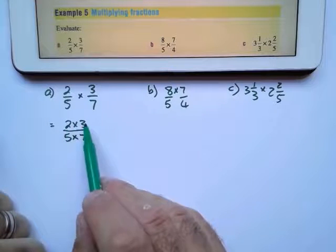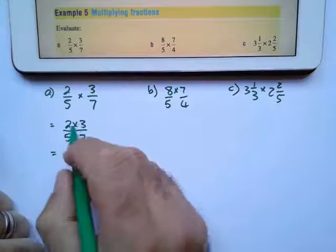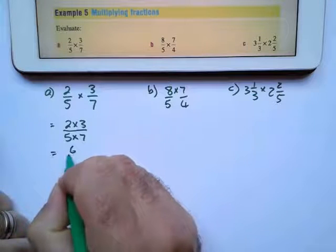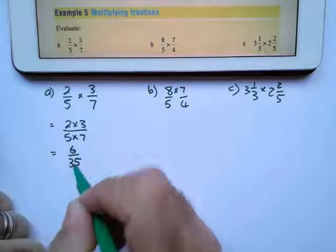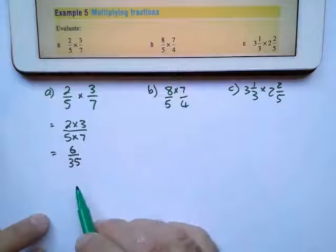2 can't divide any of those. 3 can't divide any of those. So 2 times 3 is 6, 5 times 7 is 35, and this will be your answer in simplest form.